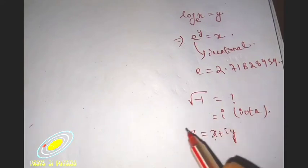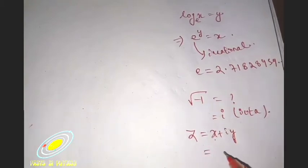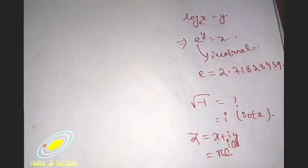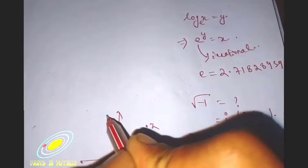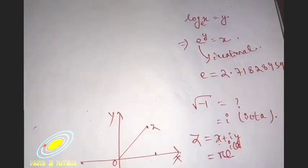Now we can also write x plus i y in the form z equals r e to the i theta, because in the complex plane, if this is z and this is the x-axis and this is the y-axis, then if we relate this z with the origin, we will get a length that is r, and if it makes angle theta...